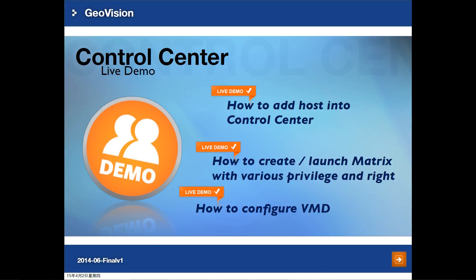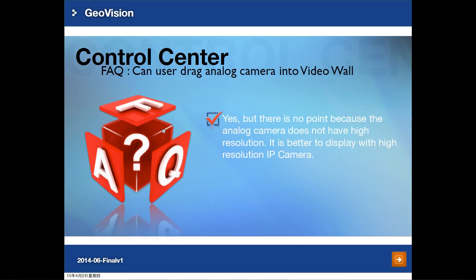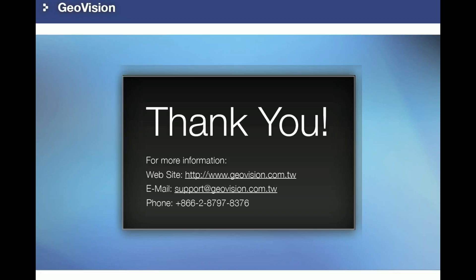The live demo session is in a separate second video. We are going to check the last slide about FAQ. A frequently asked question: Can I drag and drop an analog camera into the video wall? Yes, you can. However, since video wall is designed for large, high-resolution display, analog cameras do not always have better resolution, so the image may look pixelized or blurry. For the latest software downloads and product information, check our website at www.geovision.com.tw. For any questions, email support@geovision.com.tw. Thank you.